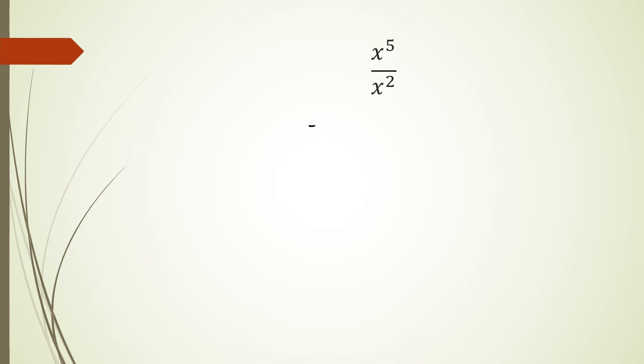Now if I was to do this the long method, I would write out x to the power of 5 in the numerator, which is x times x times x times x times x, and of course x squared at the bottom. I've got x multiplied by x.